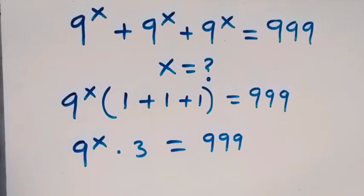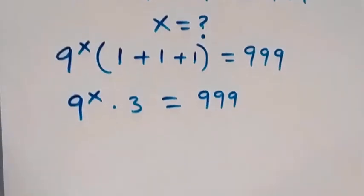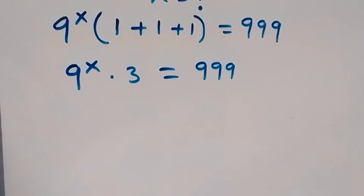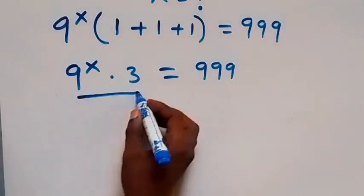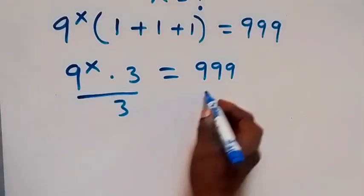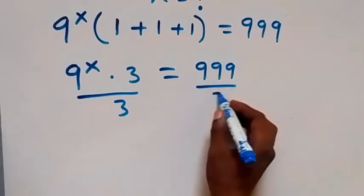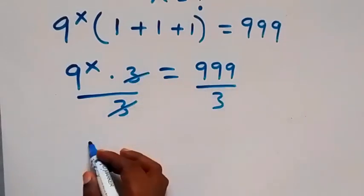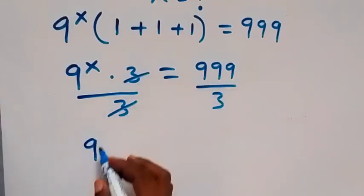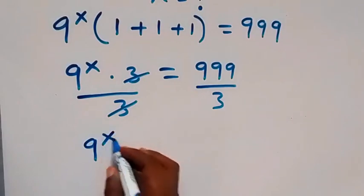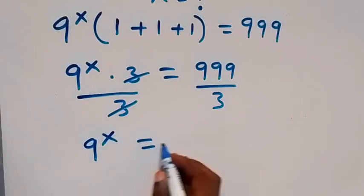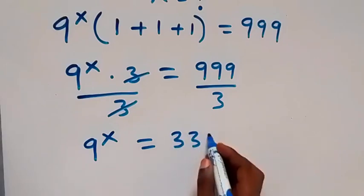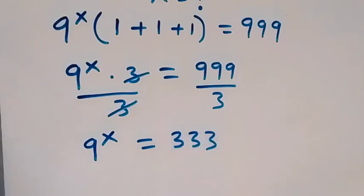Then in the next step, we divide both sides by 3. So divide this side by 3, also divide this side by 3. The 3 cancels, and we are left with 9 raised to the power x equals 333.